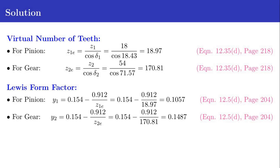Now the Lewis form factor: for pinion Y1 equals 0.154 minus 0.912 divided by Z1E. Z1E is 18.97, hence Y1 equals 0.1057. For gear Y2 equals 0.1487. The equation for Lewis form factor is given in equation 12.5D of page 204.